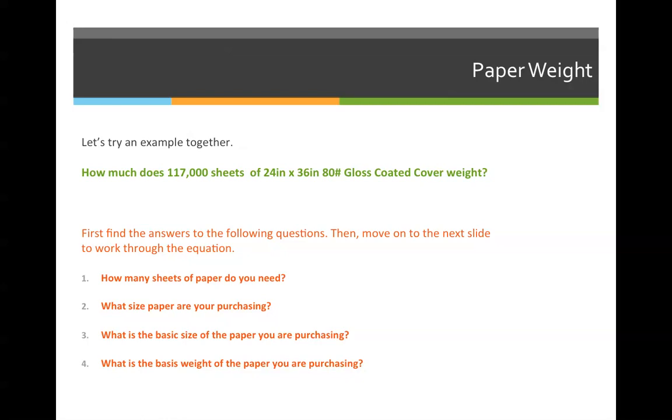So let's try to walk through this. How much does 117,000 sheets of 24 by 36 80 pound gloss coated cover weigh? First, find the answers to the following questions. Then move on to the next slide to work through the equation. Push pause on your video to allow you time to find the answers to these four questions.